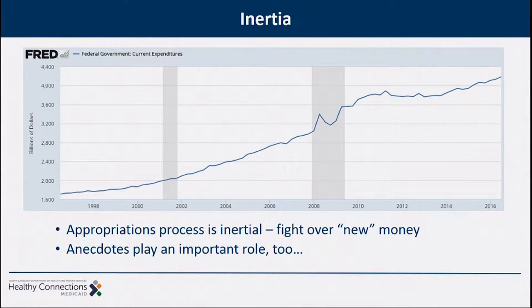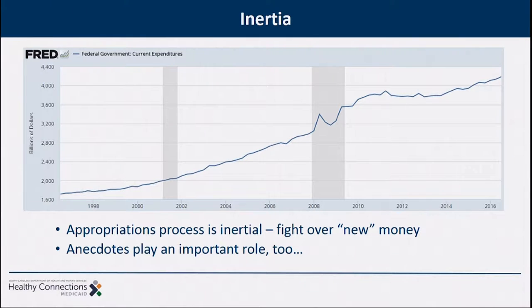Going back to the budget process, at the end of the day everything's about money. Each year you theoretically have — depending on whether you're in city, state, or national government — millions or billions or trillions of dollars available, but the overwhelming majority of that money will go to exactly where it went last year. An average state government will have something like a $25 billion budget between own-source and federal resources.